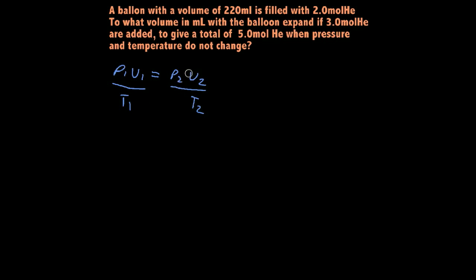Now all we're going to do is add in moles for Avogadro's Law. If you remember, Avogadro's the guy that determined that there are 6.022 times 10²³ atoms of anything for one mole. It's just a ratio, just like anything else, and so it's commonly used in chemistry. Normally you'll see it with a little lowercase n — so you'll have n1 and n2.